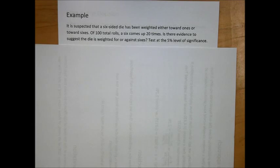Let's quickly go through another example. It is suspected that a six-sided die has been weighted either towards ones or towards sixes. Of 100 total rolls, a six comes up 20 times. Is there enough evidence to suggest the die is weighted for or against sixes? Test at the 5% level of significance.